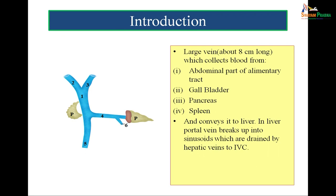The portal vein is a large vein about 8 cm long which collects blood from the abdominal part of the alimentary tract, gallbladder, pancreas and spleen, and conveys it to the liver. It ensures that whatever substances are ingested, they are processed in the liver before they enter the systemic circulation.